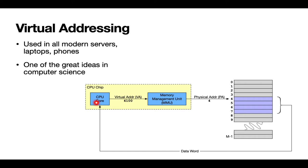The CPU works entirely in terms of virtual addresses. It issues an address — in this case, 4100 — and the memory management unit converts that into the location in physical memory where that virtual address is stored. In this particular case, it maps back to address number four and fetches back four bytes from that location, and the values come back to the CPU.